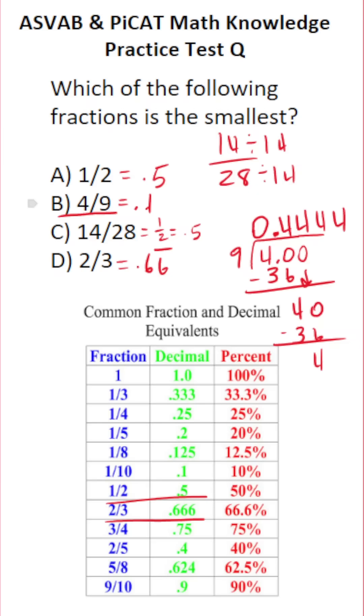So we know this is 0.44 repeated. Question is, which of these decimals is the smallest? Well, we have 0.5 that repeats itself twice. 0.44 is smaller than 0.66. So the smallest fraction is 4 ninths, which we converted to a decimal via some simple long division.